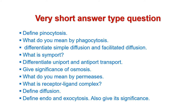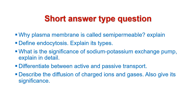The next category of questions are short answer type questions which you have to answer in a single paragraph. The first question from this category is: why is the plasma membrane called semi-permeable? Explain. Next is: define endocytosis and also explain its types.